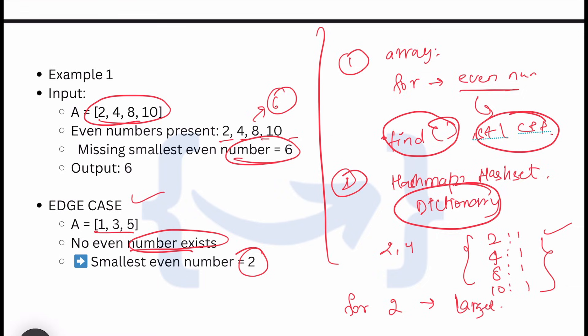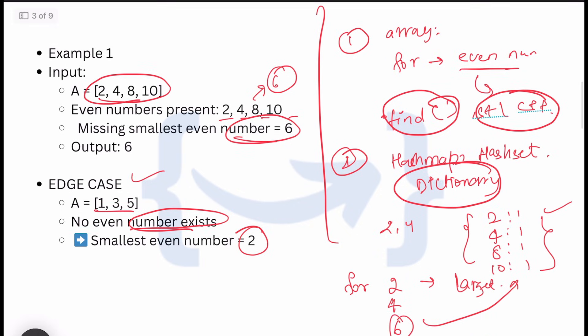It will iterate: 2 is there, then 4, then 6. As we can see, 6 is not present in the hash map or hash set, so we can directly return 6 as the minimum missing element.